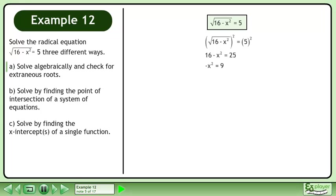Subtract 16 from both sides to get -x² = 9. Divide each side by -1 to get x² = -9.